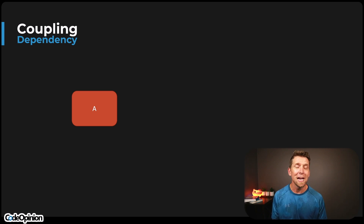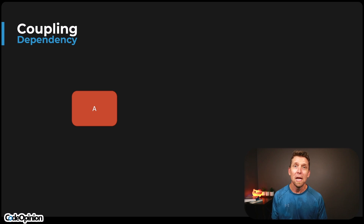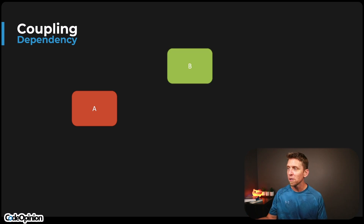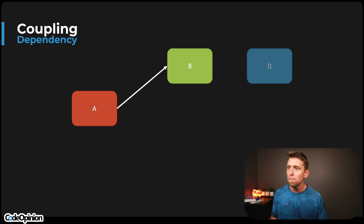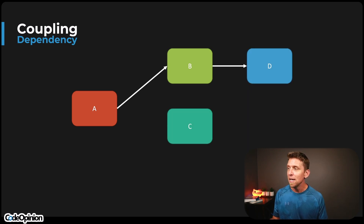If you want to build better systems, I think it's really important that you understand the many aspects of coupling. And that's what I'm going to cover, because it goes beyond just thinking about, for example, the dependencies on things where A depends on B, B depends on D, C depends on A.